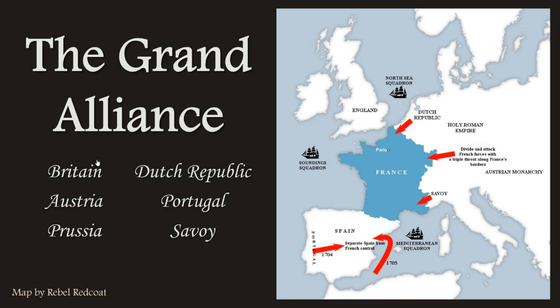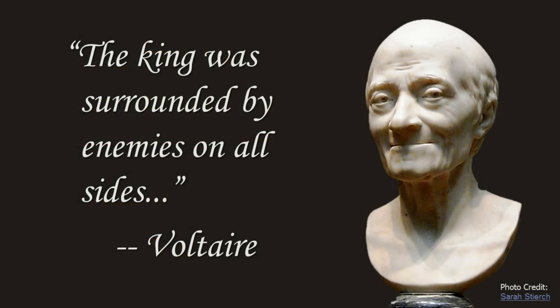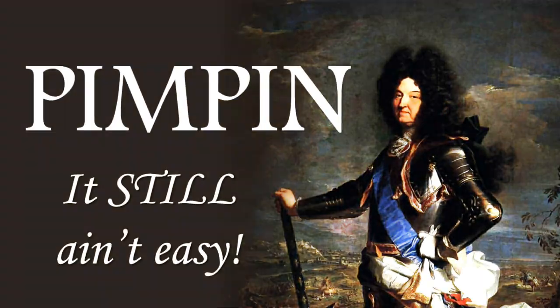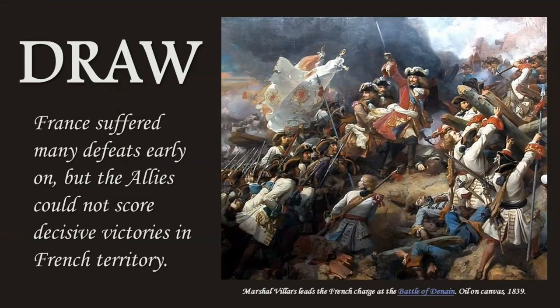The Grand Alliance mobilized again: Britain, Austria, Prussia, the Dutch Republic, Portugal, and Savoy all attacked France and Spain. As Voltaire said, the king was surrounded by enemies on all sides. If you think about the sheer awesomeness of Louis, he really should have been defeated decisively going against every major power of Europe. But although Louis faced early defeats at the hands of the Duke of Marlborough, he was able to fight the Grand Alliance to a draw.